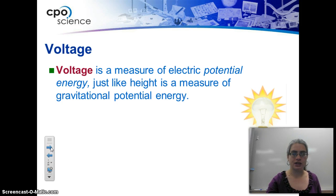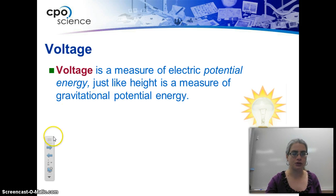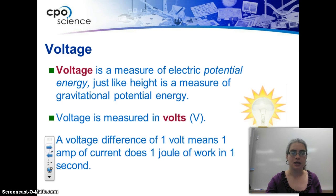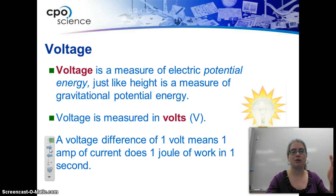Voltage is another variable we're entering in our table. Think of it as electrical potential energy — the height of a cliff the water falls down, or how much water pressure there is. Think of it like gravitational potential energy: how much potential energy is available to light a bulb or get a task done? It's measured in volts, capital V. A voltage difference of one volt means one amp of current does one joule of work in one second. Higher voltages are much more dangerous because they can do a lot more work in a short amount of time.